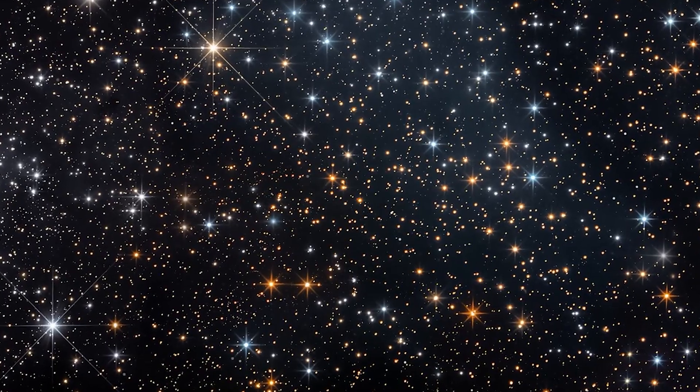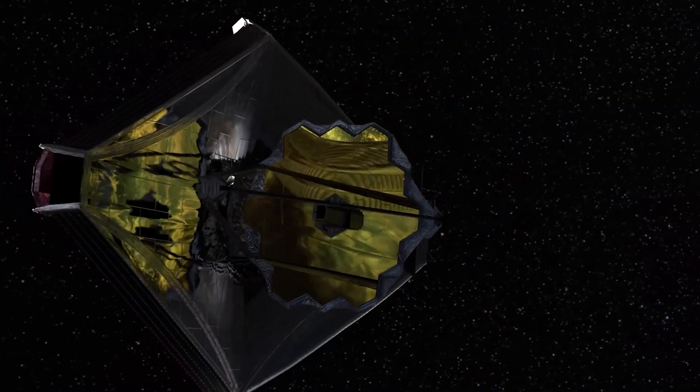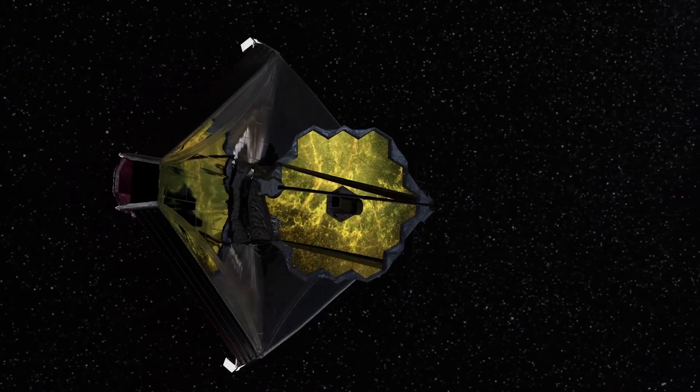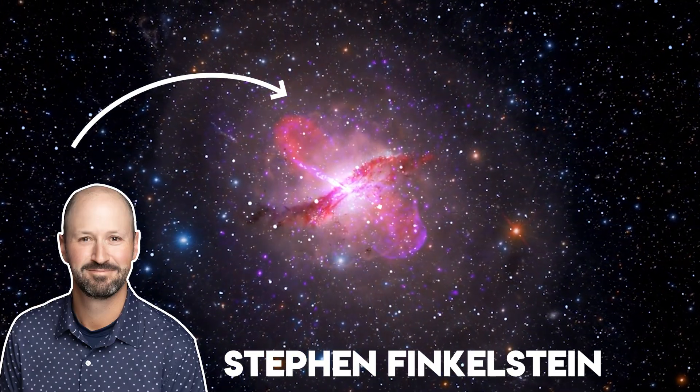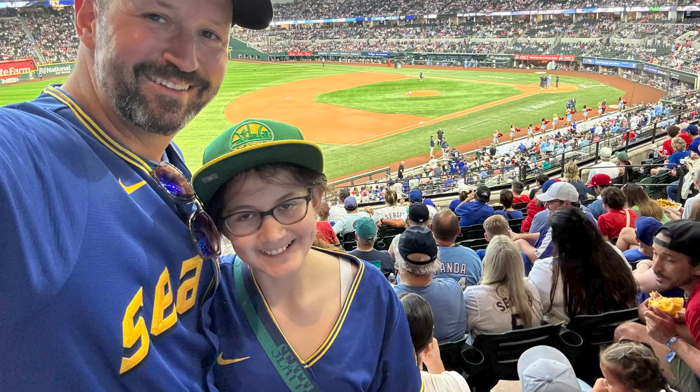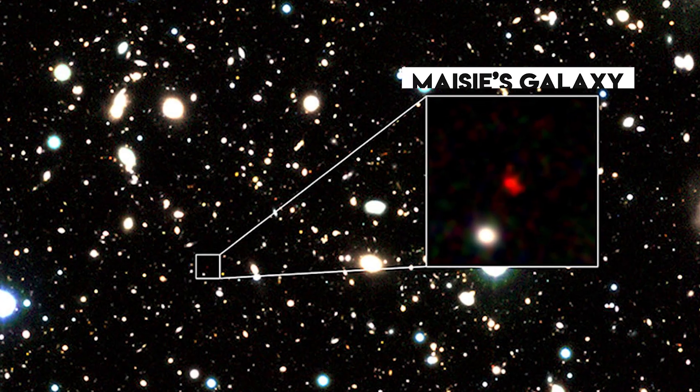And this was not just a handful of galaxies. The Webb Telescope identified hundreds, including one discovered by Austin astronomer Stephen Finkelstein. He named it Macy's Galaxy in honor of his daughter, since it was spotted on her birthday.